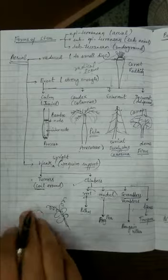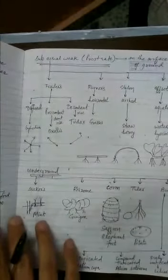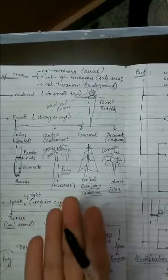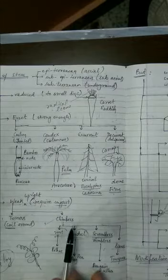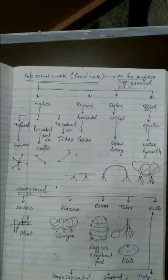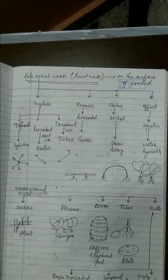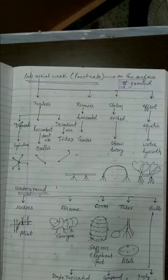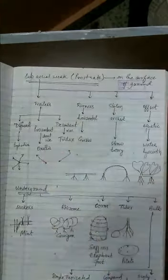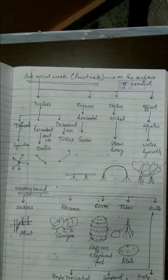To recap: aerial stems are those above the soil surface. They can be reduced and close to the soil, strong enough to stand tall, or weak and needing support to climb or coil. The next category is sub-aerial stems. Sub-aerial weak stems do not develop roots, tendrils, or thorns to climb, and cannot twine — they simply spread on the surface.